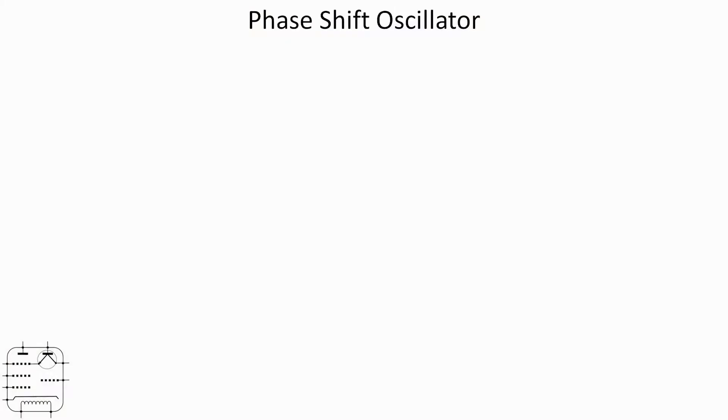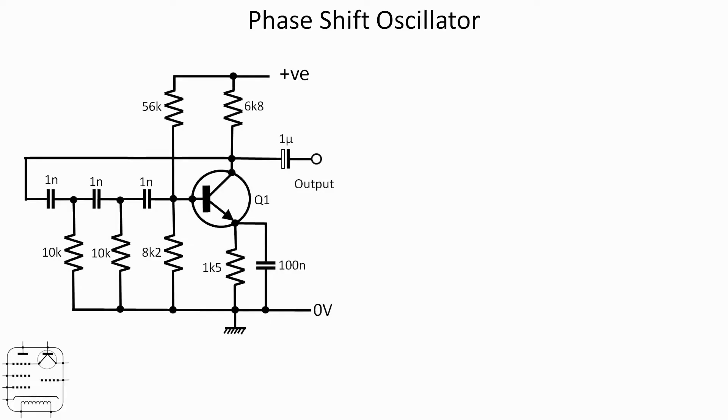The first oscillator we're going to look at then in this episode is a phase shift oscillator. It's a single transistor oscillator as I mentioned in the intro, and here we've got Q1 in the mode of a common emitter amplifier.